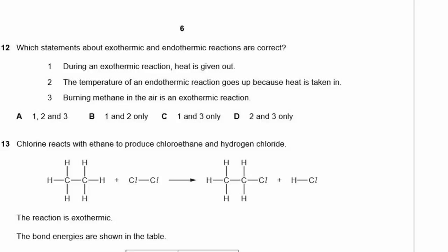Question 12. Which statements about exothermic and endothermic reactions are correct? Statement 1: during an exothermic reaction, heat is given out — correct, the thermometer gets warmer. Statement 2: the temperature of an endothermic reaction goes up because heat is taken in — incorrect; the temperature actually drops because energy is taken from the surroundings. Statement 3: burning methane in air is an exothermic reaction — correct, if it feels hot it's exothermic. So statements 1 and 3 are correct, and the answer is C.